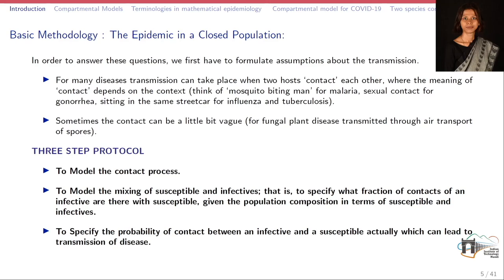The basic methodology that we follow in a certain closed population is the following. First of all, we have to formulate certain assumptions for the transmission. For many diseases, transmission takes place either when two hosts contact each other by several means or it also depends upon their interaction. Sometimes the contact can be a little bit vague. There are three-step protocols that we follow in order to study an epidemic in a closed population: first, we model the contact process — how the hosts are contacting.